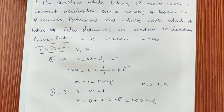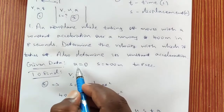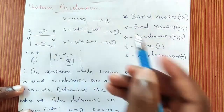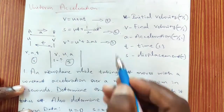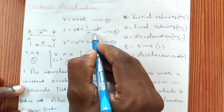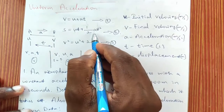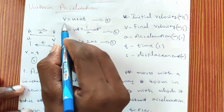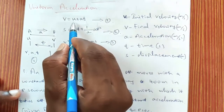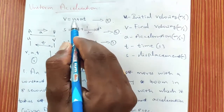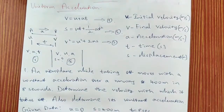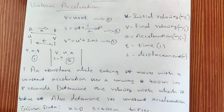So in the first case, knowing u, s and t, we used equation 2 to find a, then used equation 1 with u, a and t to find v. This shows how to select equations accordingly to solve the problems.